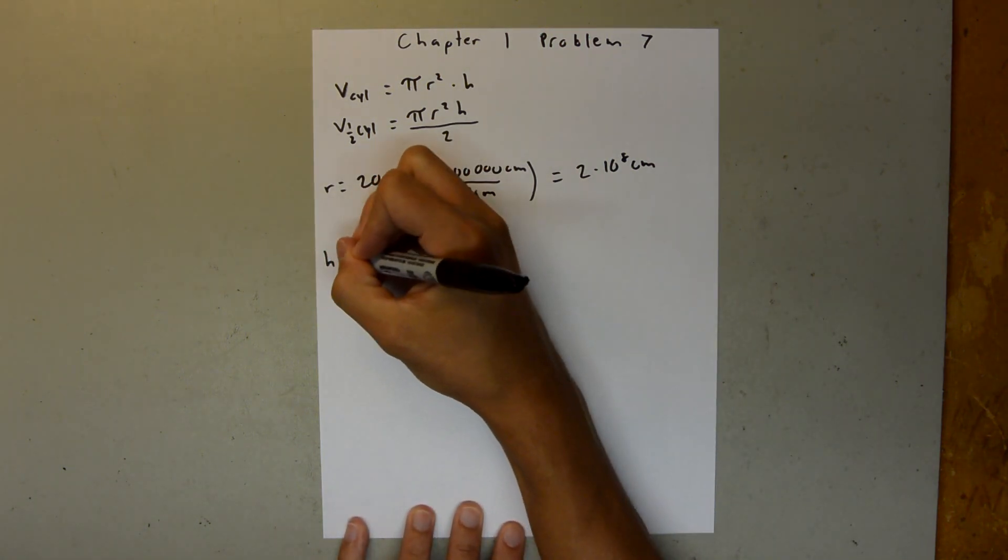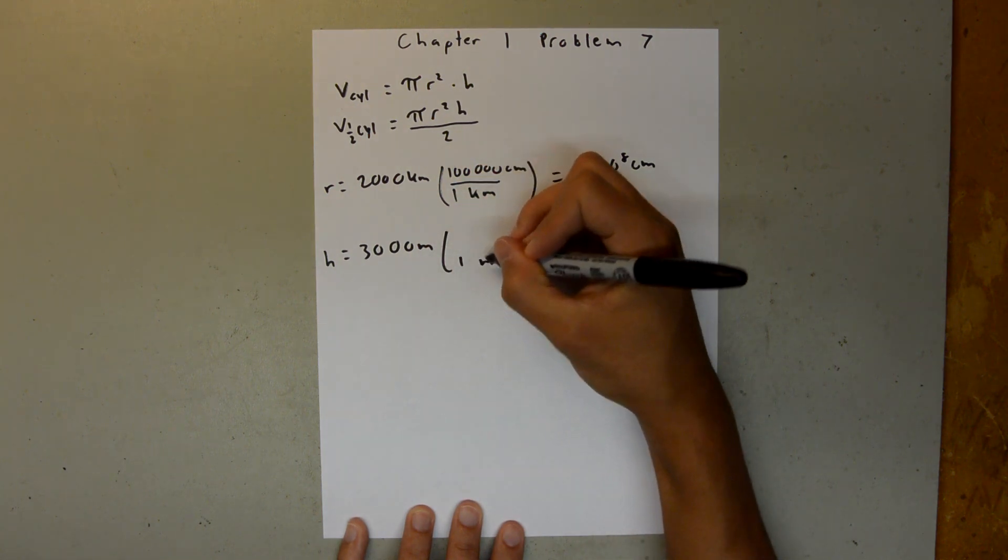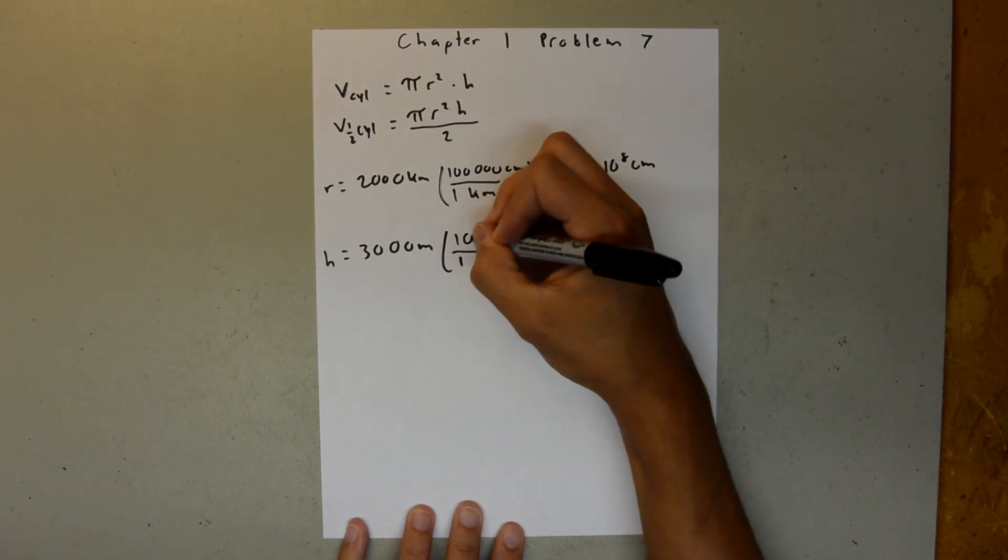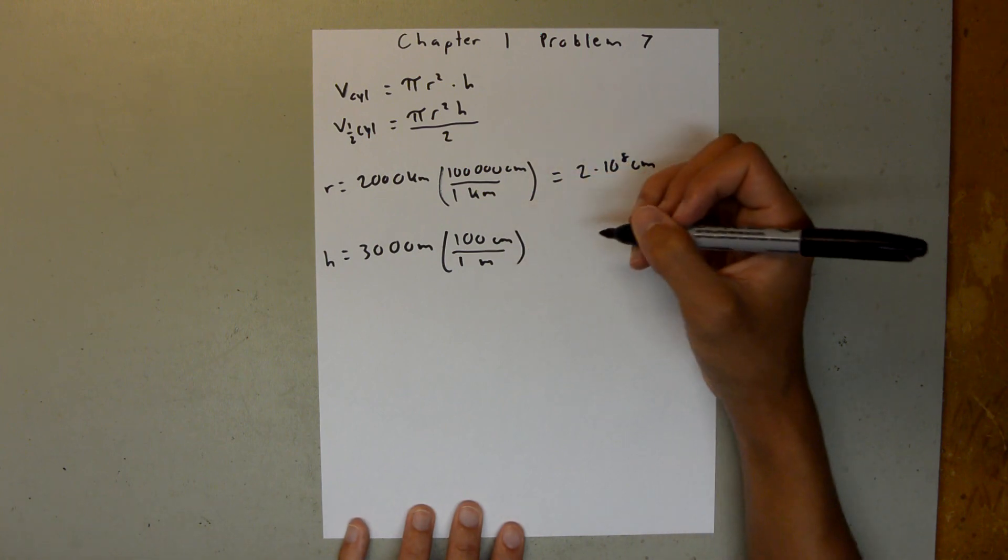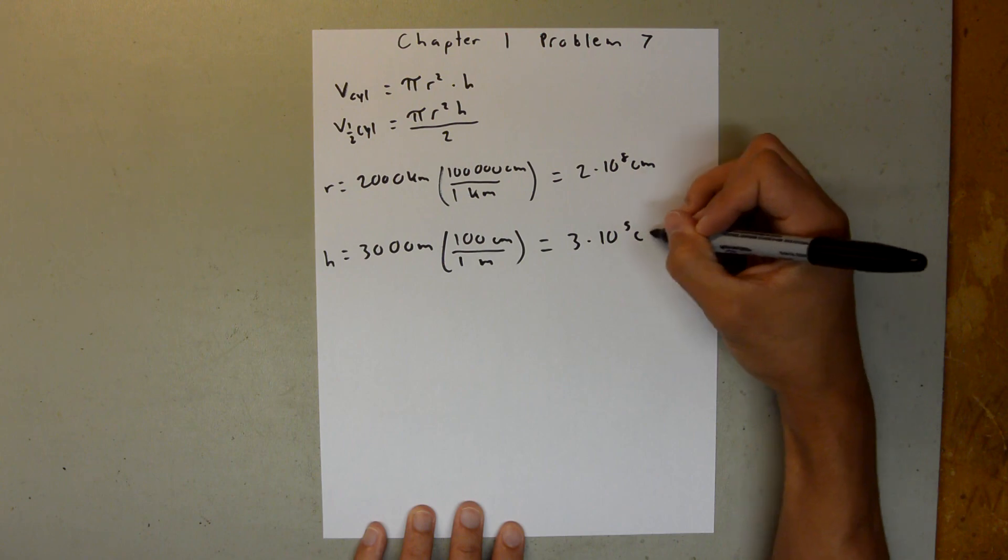We are told the height is equal to 3,000 meters, and we know that 1 meter is equal to 100 centimeters. And that is equal to 3 times 10 to the 5 centimeters.